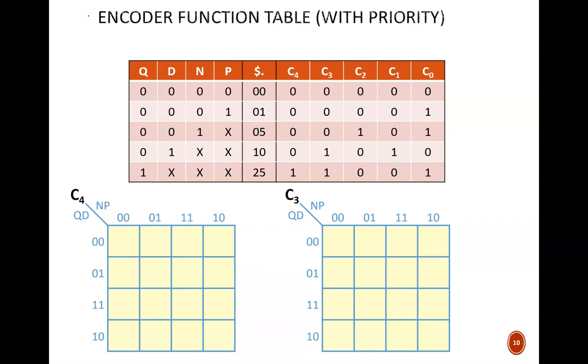A slightly more robust design is a priority encoder. If two or more coin signals happen to be active at the same time, the larger coin gets counted, and the smaller coins are ignored. Practically, this is nice for the vending machine user. If both a dime and quarter are active, they get credit for the quarter.